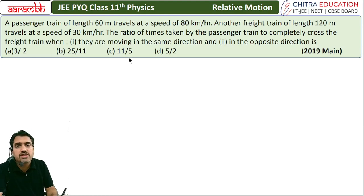A passenger train of length 60 meters travels at speed 80 kilometers per hour. Another freight train of length 120 meters travels at a speed of 30 kilometers per hour. The ratio of time taken by passenger train to completely cross the freight train when they are moving in same direction and opposite direction.